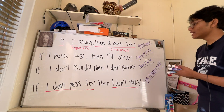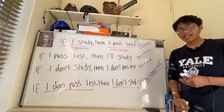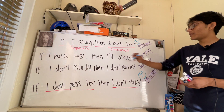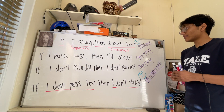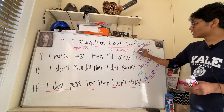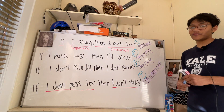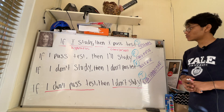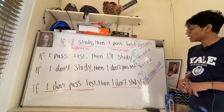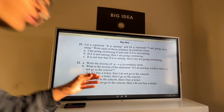Notice how the original statement is true — if you study then you'll pass your exams. The contrapositive is also true — if I don't pass the test then I don't study. But the converse — if I pass the test then I'll study — that's a false statement. And the inverse — if I don't study then I don't pass the test — is also false. The moral of the story: the original statement and the contrapositive will always have the same truth value, and the converse and inverse will always have the same truth value.